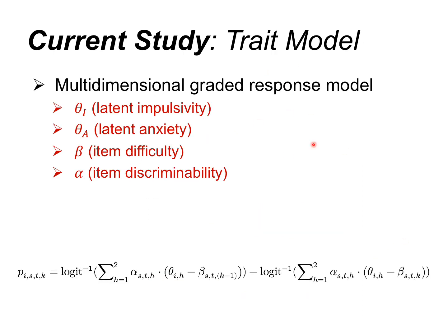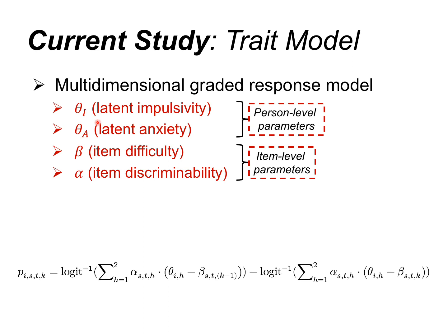To model the traits we used an Item Response Theory model — specifically a multi-dimensional graded response model (MGRM). The graded response model is important because these are ordinal Likert scales with multiple response categories. The multi-dimensional piece is important because impulsivity and anxiety interact to give rise to behaviors. Each person has a latent impulsivity and anxiety trait; there are item-level parameters for difficulty across response categories and two discriminability parameters per item, one for each latent dimension.